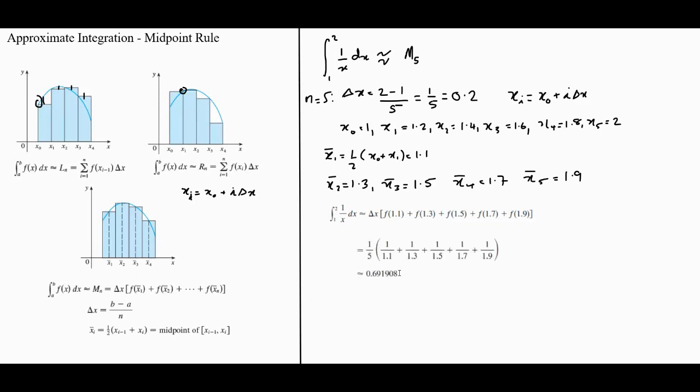The delta x is 1 fifth, as you can see, and then you have all these, and that's approximately equal to 0.691908.